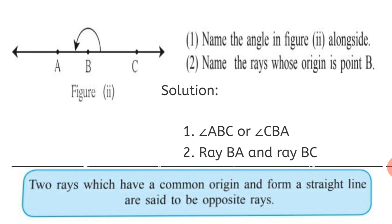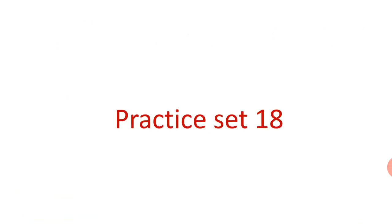Two rays which have a common origin and form a straight line are said to be opposite rays. Now let's move on to Practice Set number 18.